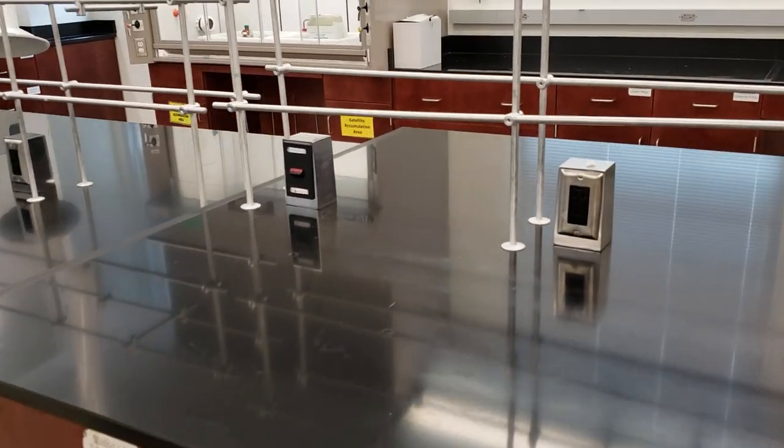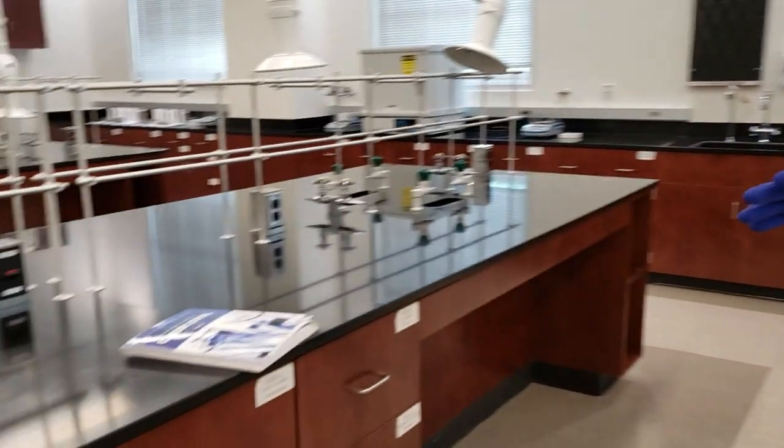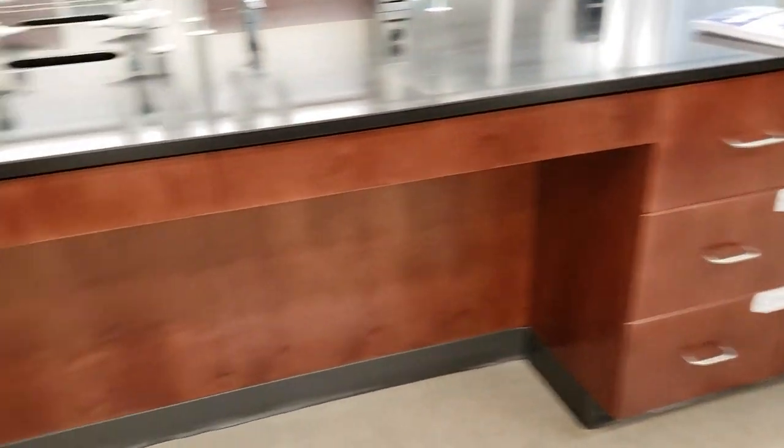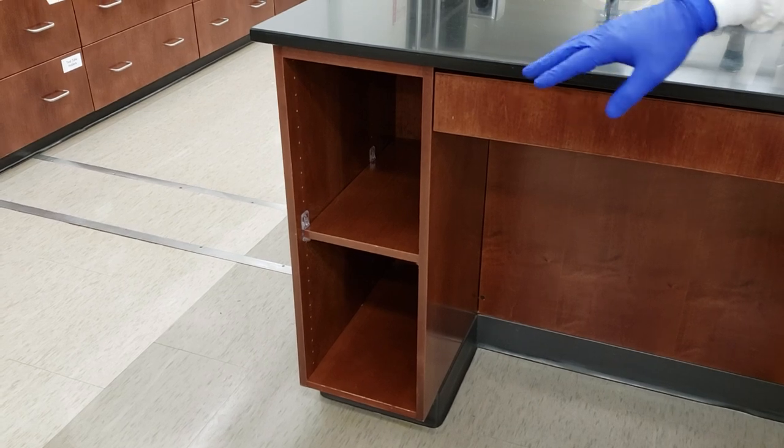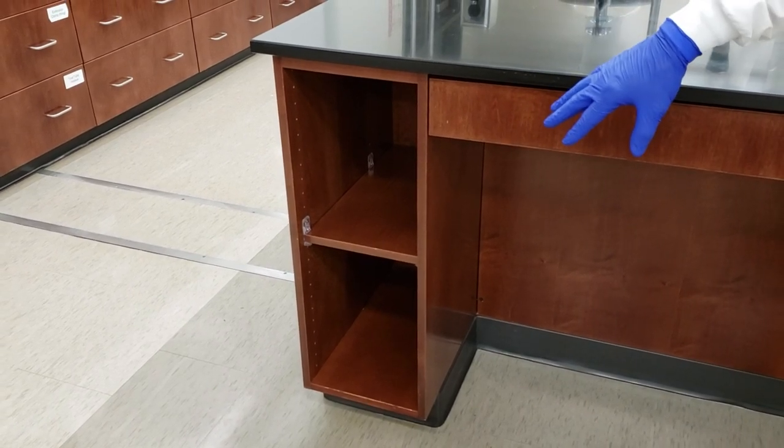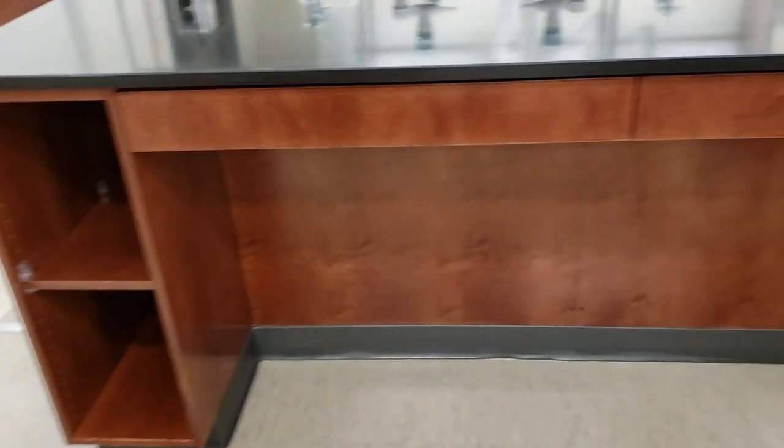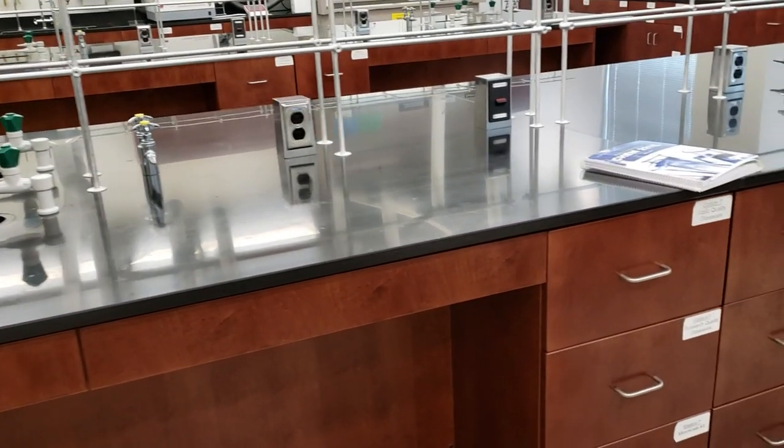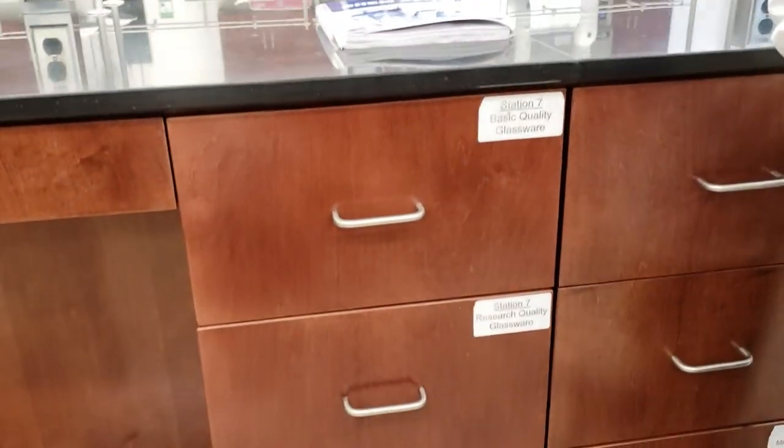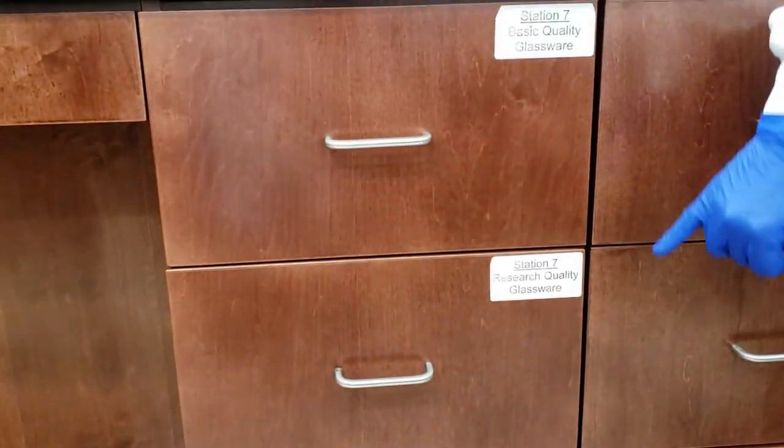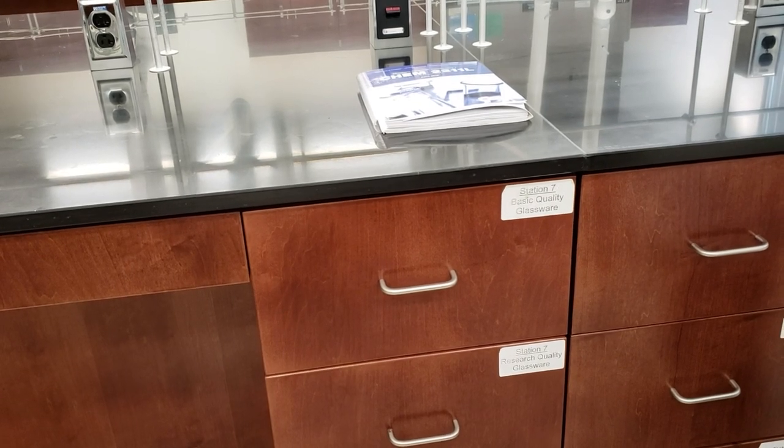As far as individual station setups, each lab station has two cubby holes for students' backpacks. We'll never leave personal items on the floor. Then each station is given three drawers: basic quality glassware, research quality, and microscale. We're going to go through each drawer and show you what's inside.